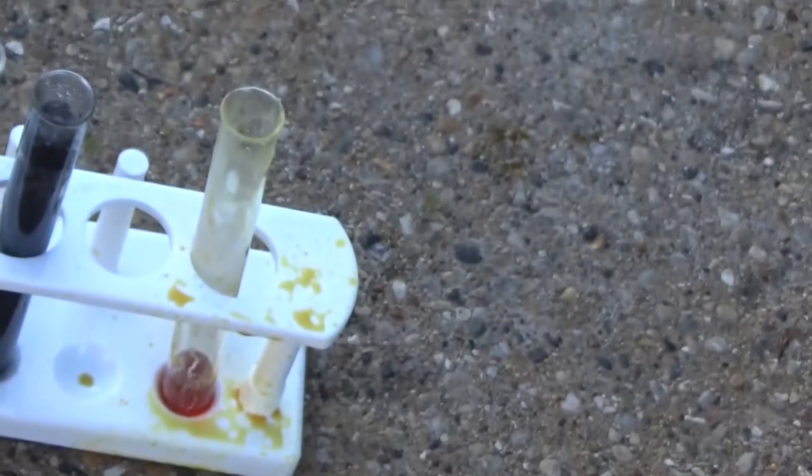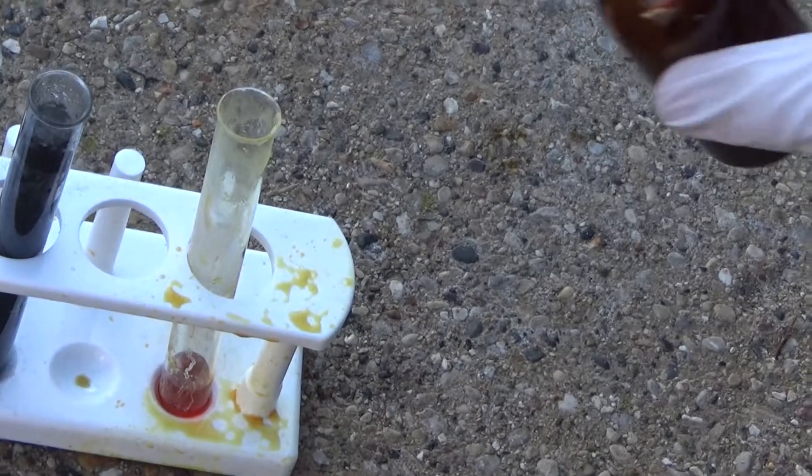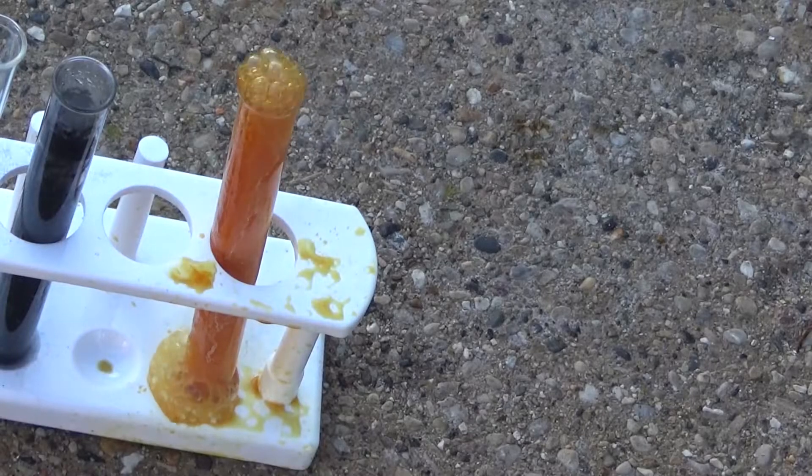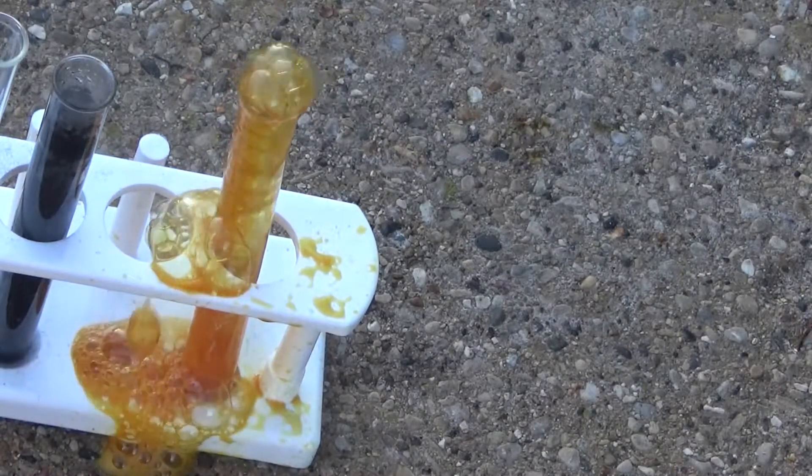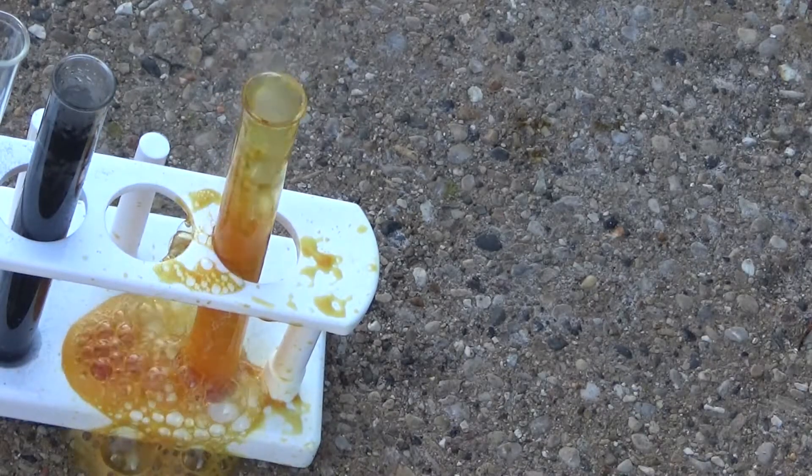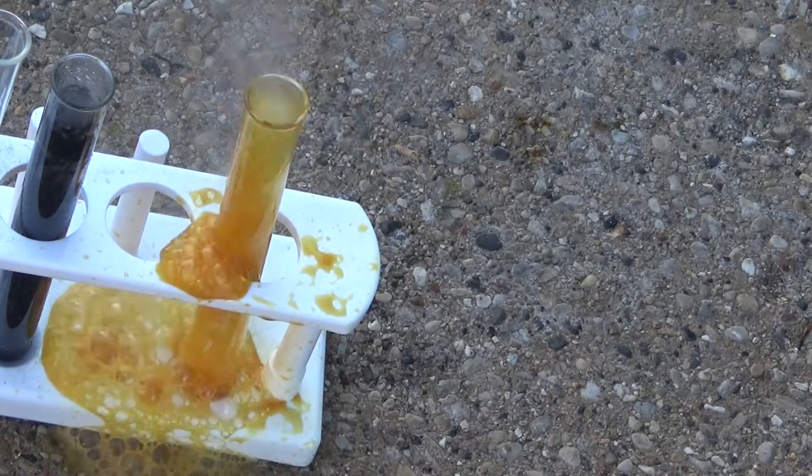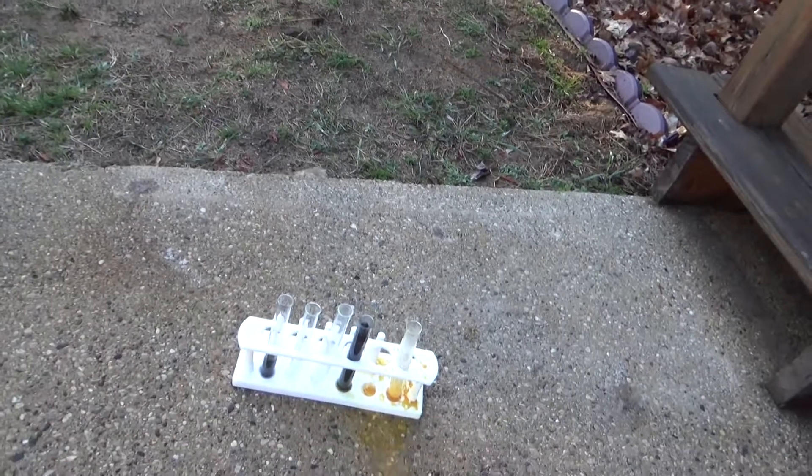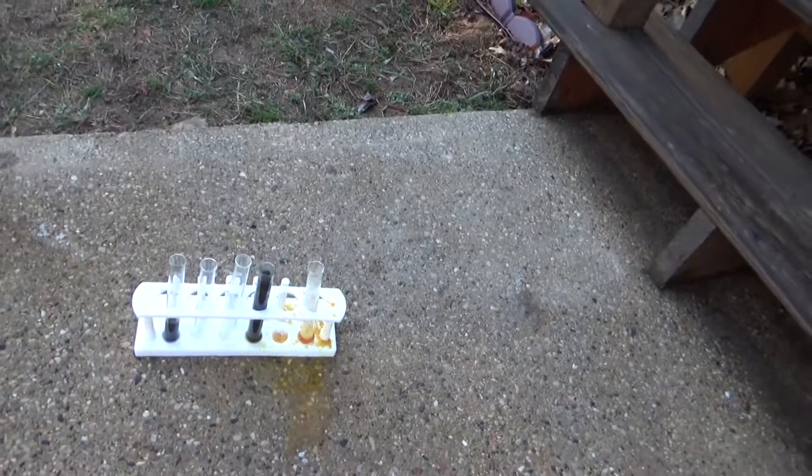I'm dumping the rest of this peroxide into the potassium iodide test tube. Here we go. Three, two, one. There it goes. Basically elephant's toothpaste, right? Holy crap. Look at all that vapor coming off. That was awesome.